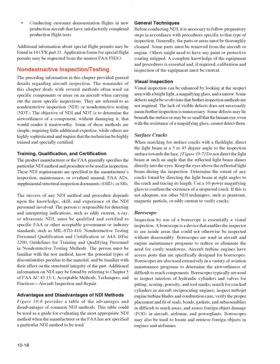Visual inspection can be enhanced by looking at the suspect area with a bright light, a magnifying glass, and a mirror. Some defects might be so obvious that further inspection methods are not required. However, lack of visible defects does not necessarily mean further inspection is unnecessary, as some defects may lie beneath the surface or be too small for the human eye to detect. When searching for surface cracks with a flashlight, direct the light beam at a 5 to 45 degree angle to the inspection surface. Determine the extent of any cracks by directing the light at right angles to the crack. Use a 10-power magnifying glass to confirm a suspected crack, or use penetrant, magnetic particle, or eddy current techniques to verify.